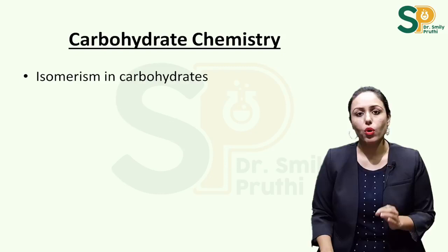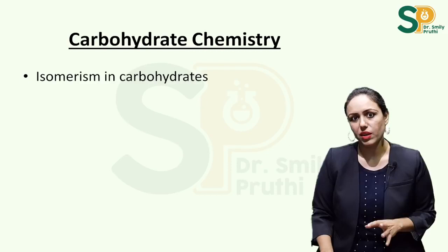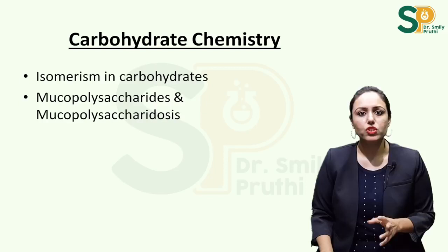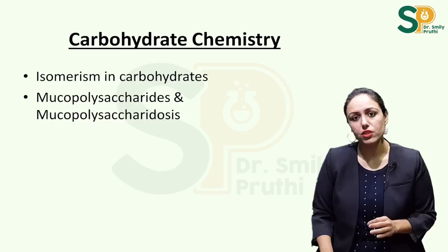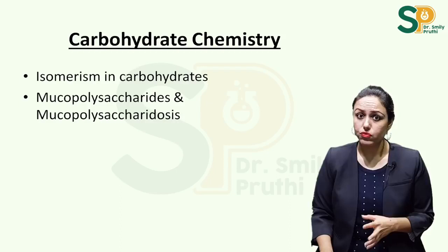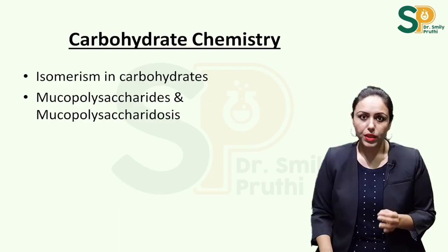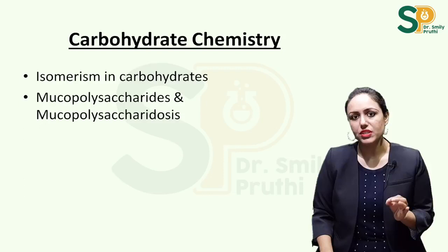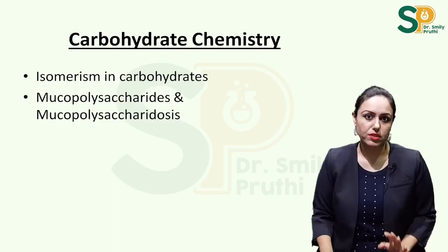In carbohydrate chemistry, the most important topic is isomerism in carbohydrates — do all types of isomerisms with all structures of carbohydrates, as image-based questions can be asked on structures. Also read mucopolysaccharides or GAGs and their diseases — mucopolysaccharidosis, a lysosomal storage disease. Focus only on types 1, 2, and 6, covering general clinical features and the specific enzyme absent in each disease.